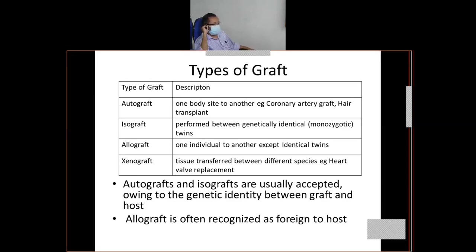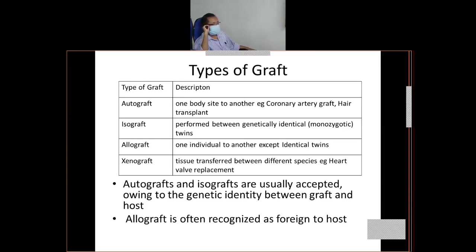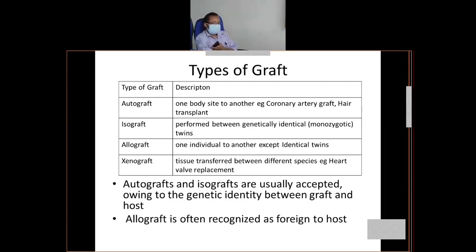Practically, majority of organ transplants you will find are allografts. Autograft is common in the sense of hair transplant, and sometimes bone marrow transplant where stem cells are taken from the same individual, proliferated in vitro, and injected again.